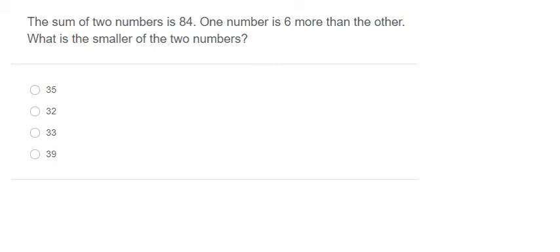Hello everybody, so today I will talk about arithmetic reasoning. The sum of two numbers is 84. One number is 6 more than the other. What is the smaller of the two numbers? This means that we need to find the smaller number only.